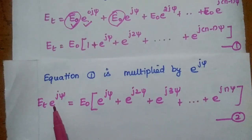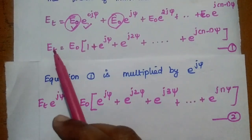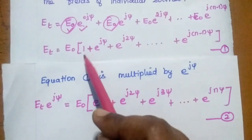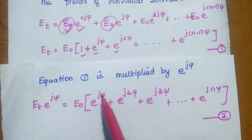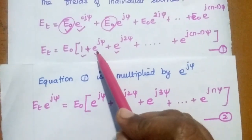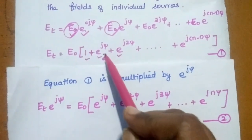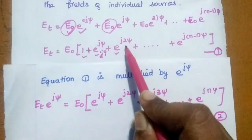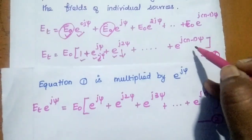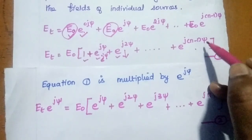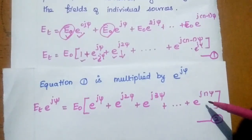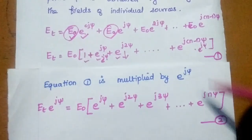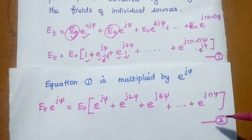Multiplying each term by e^(jψ): 1 · e^(jψ) = e^(jψ), e^(jψ) · e^(jψ) = e^(j2ψ), the next term becomes e^(j3ψ), and so on. Multiplying e^(j(N−1)ψ) by e^(jψ) gives e^(jNψ). This is the second equation.